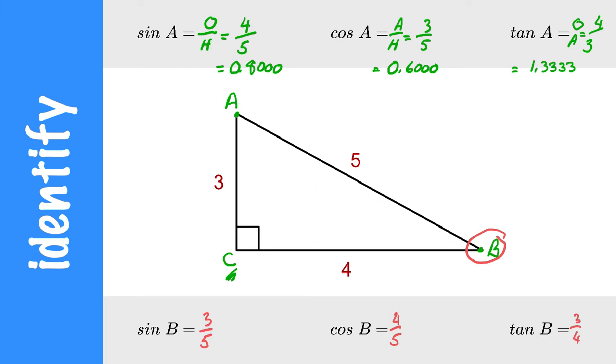Reduce those to decimals. And you get 0.6, 0.8. Tuck this one underneath. And 0.7500.